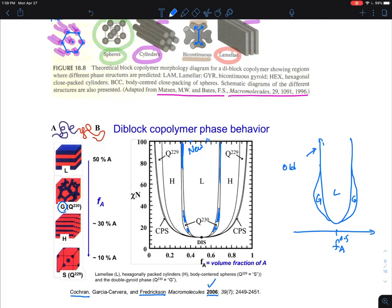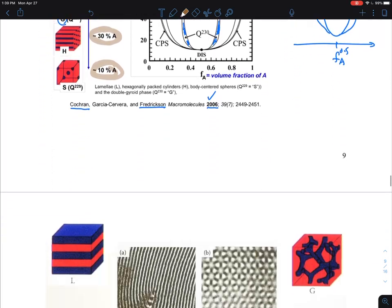Other than that, I've provided a recap: when you have 50-50, it's lamellar phase; 30 percent A, cylindrical phase; 10 percent A, spherical phase with body-centered cubic. That's the phase behavior.